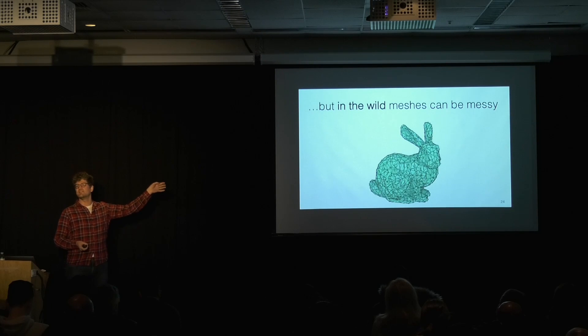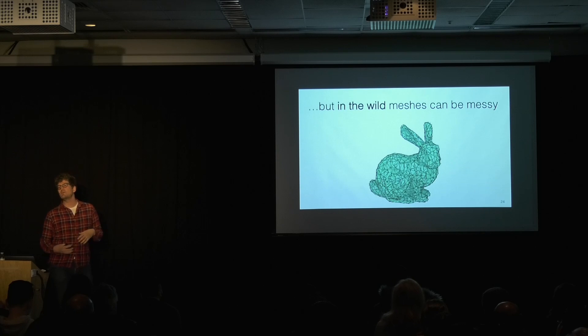But if you and I look at this, we see that this is a bunny, right? We might see that it has some noise or some artifacts, but we see that this is supposed to be the surface of a bunny. So how can we help the computer see what we see?